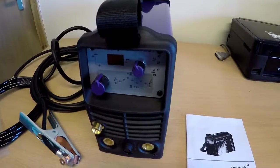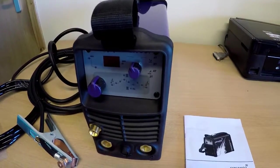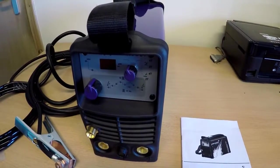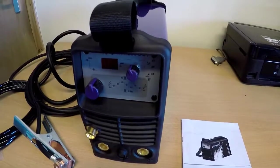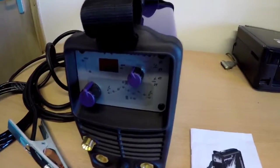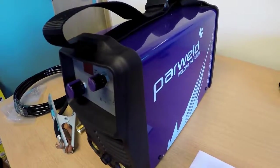We are doing a series of videos looking at the new range of machines from Parweld who are a large UK manufacturer and supplier of welding machines and consumables. This particular model here is the XTT 200DC.